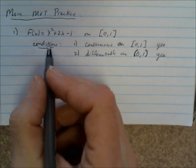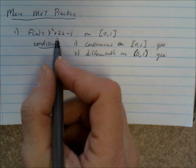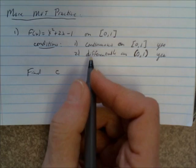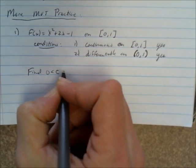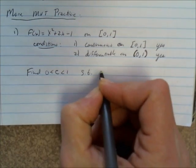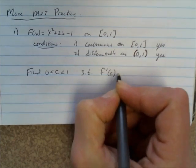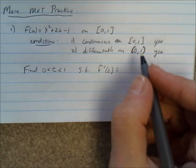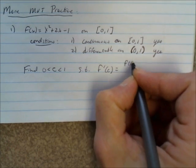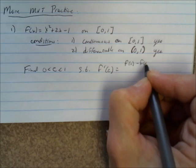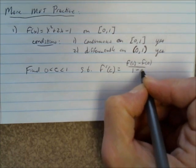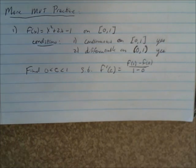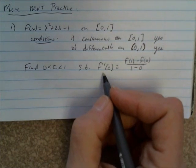What we want to do is find the value of c. And c is going to be between 0 and 1 such that f'(c) equals the slope of the line that connects those two points. And the slope of the line is f(b) minus f(a) all over b minus a. Those are the specific points.